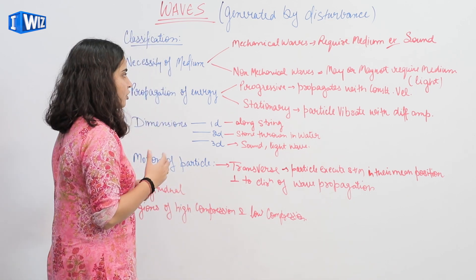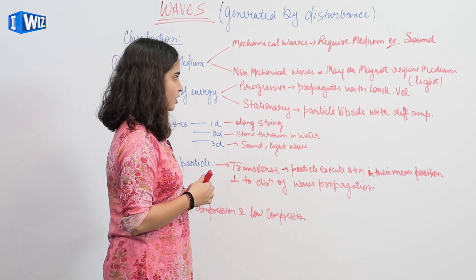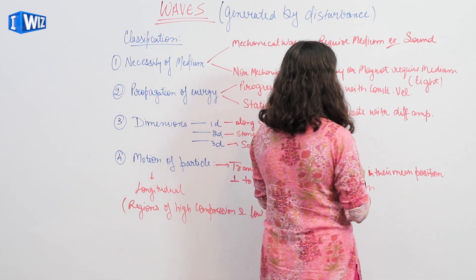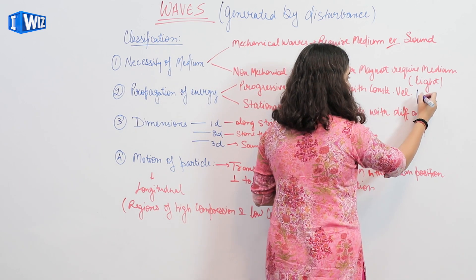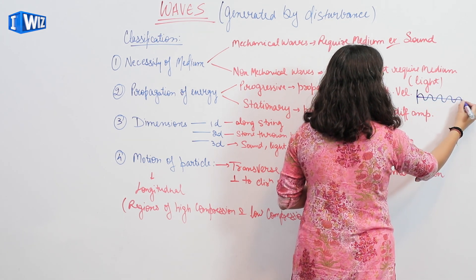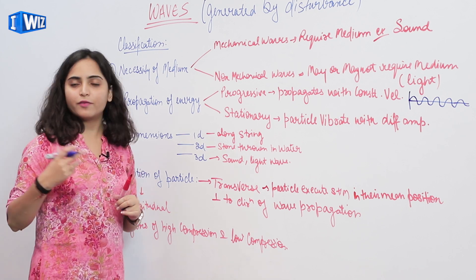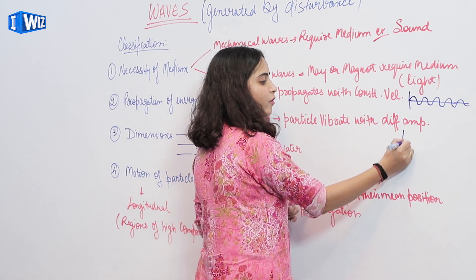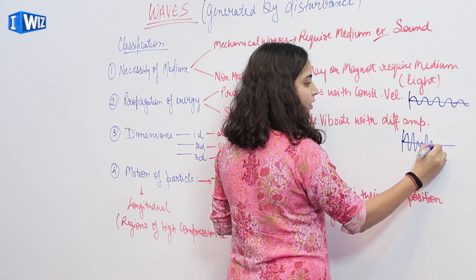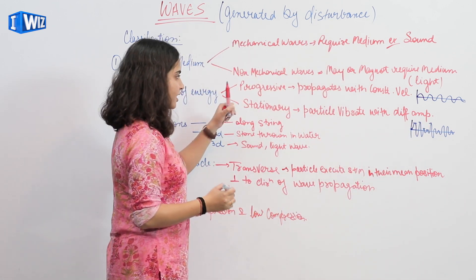Second is propagation of energy. In this, we have two branches: progressive and stationary. A progressive wave propagates with constant velocity — it is moving without any change. A stationary wave is one where particles vibrate with different amplitude, meaning the amplitude is changing.